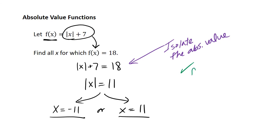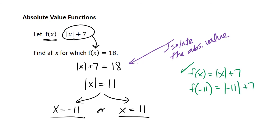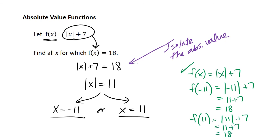Let's go back to the original function, f of x equals the absolute value of x plus 7. Plugging in negative 11: the absolute value of negative 11 is 11, and 11 plus 7 is 18. That checks. For f of positive 11: the absolute value of positive 11 is 11, and 11 plus 7 is 18. It checks in both cases. So we wanted to find all x for which f of x equals 18, and there are two x values: our two solutions are negative 11 and 11.